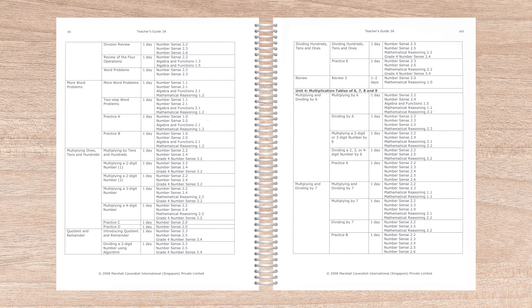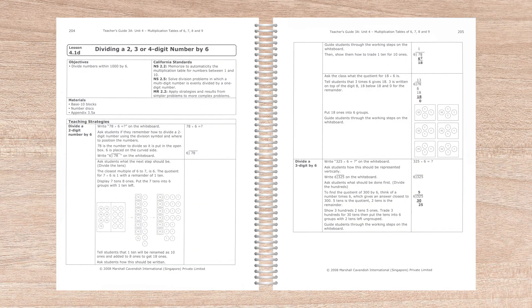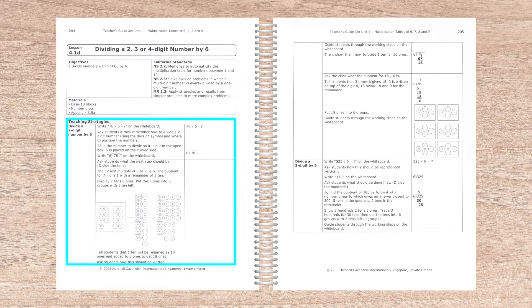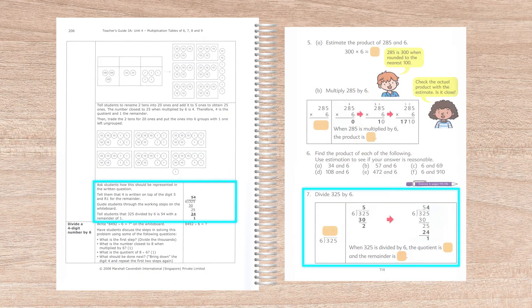The course overview in the teacher guide provides a week-by-week summary. Here you can see that unit four is covering multiplying tables of six, seven, eight, and nine over the course of five weeks. During the first week, the lessons include a lesson on dividing by six. The daily lesson plans for that day are detailed, and illustrations and instructions flow over four pages with plenty of white space for the teacher to add their own notes. The lesson starts by listing the objectives, the standards, and the materials needed. The teaching strategies outline concrete visuals using number disks and guide the student through two sample problems. Then it follows a problem that corresponds with the student text and shows the steps for working the problem through to the answer.